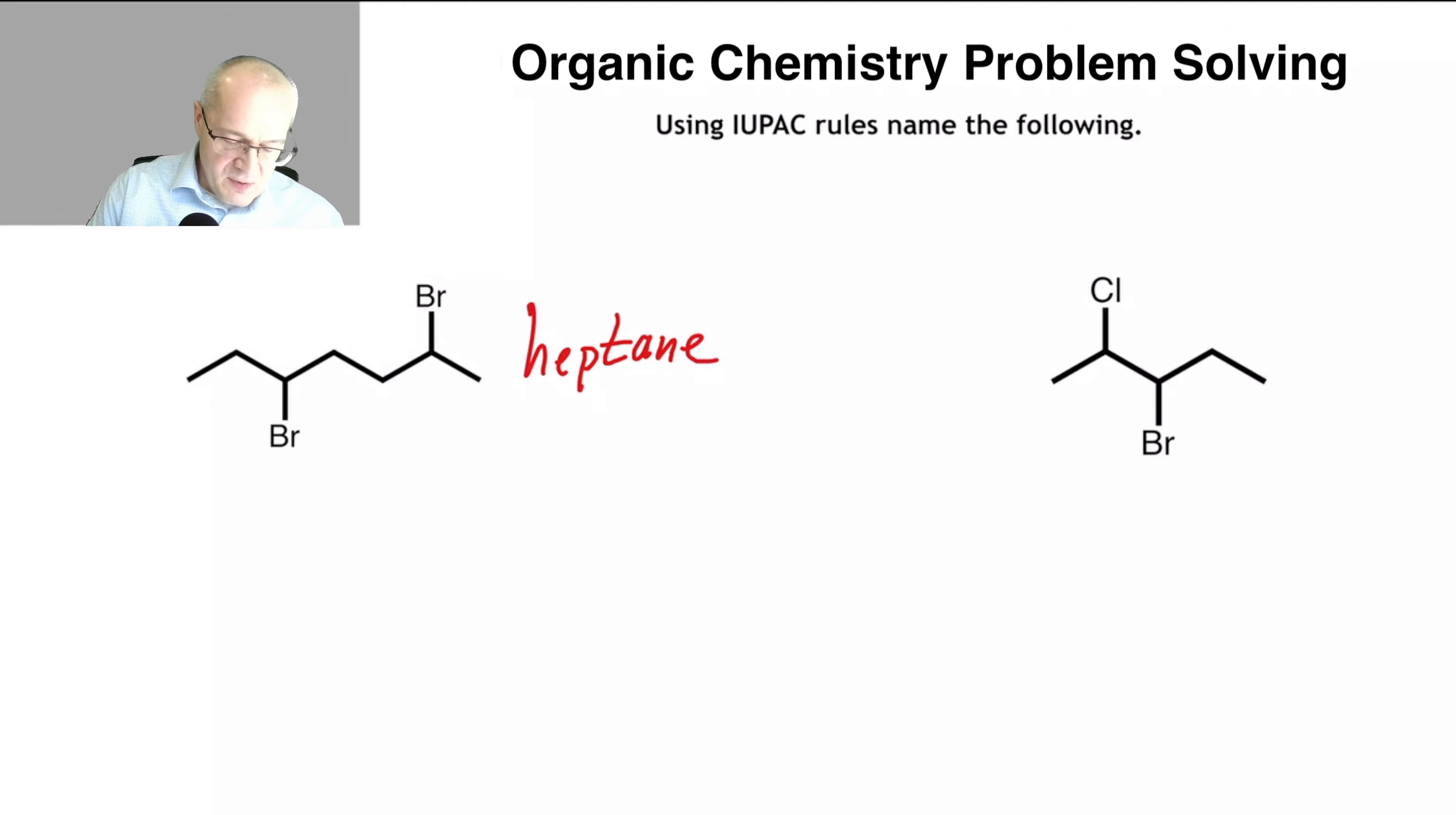Next rule: number the longest continuous chain starting from the carbon at the end closest to the first substituent. So this is carbon number one because it's closest to this first bromine right here.